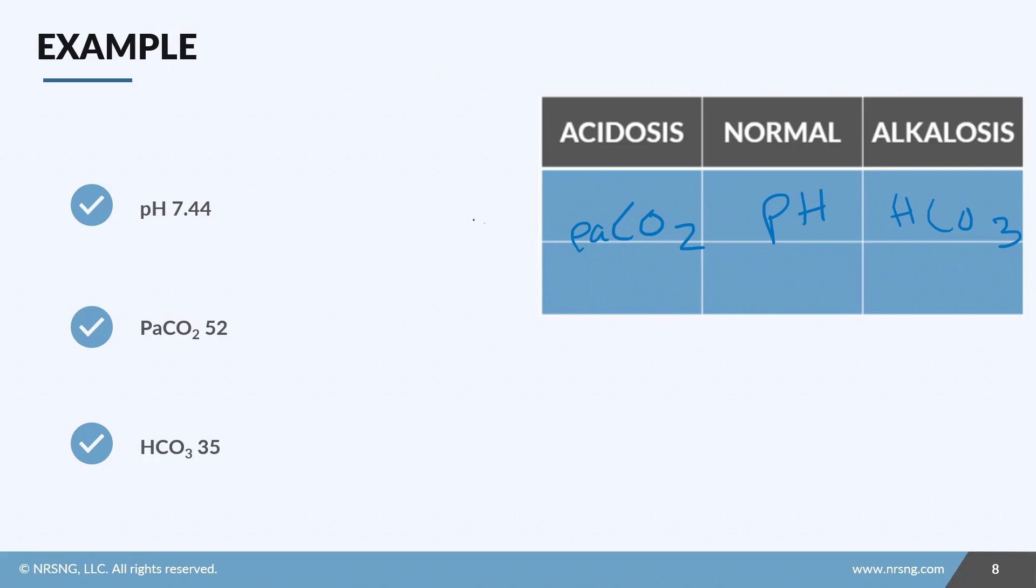If you see a straight line all the way across with a normal pH, you know that whatever it is, it is fully compensated. Okay, so now we just have to go back to that critical thinking to determine the source. Again, we just need to know which side of normal our pH is on. In this case it's leaning more towards alkalosis, in which case now we see that our bicarb is our source, and so this is a metabolic alkalosis that is fully compensated.